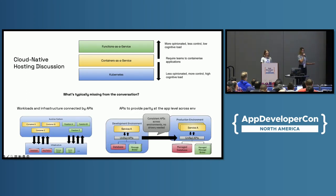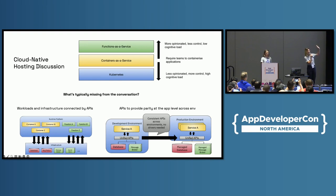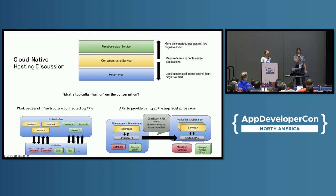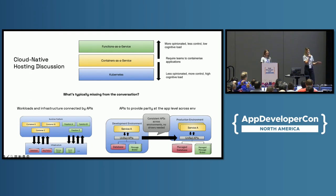What's typically missing from this conversation is probably also what's kind of missing from this conference, which is application developers. There's a gap in the conversation, right? We've made code a lot more modular in the sense that we can put it into a container, run it on Kubernetes, get consistency across cloud platforms and Kubernetes providers. But ultimately, that doesn't actually make your application code portable.